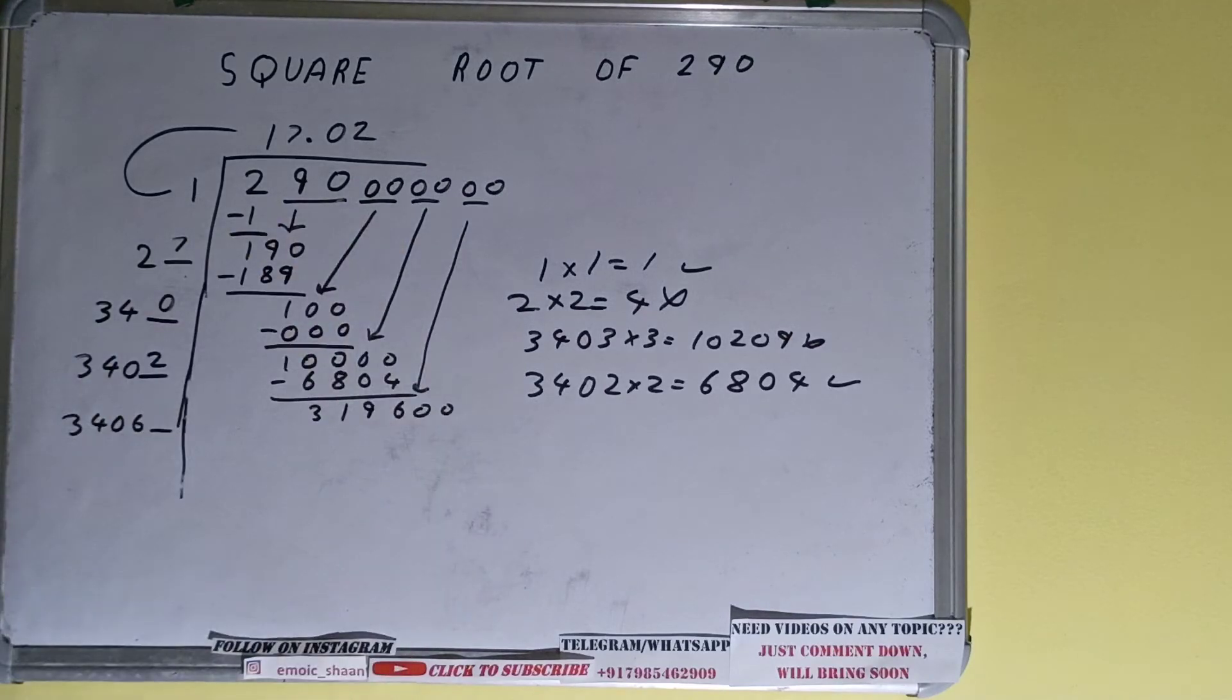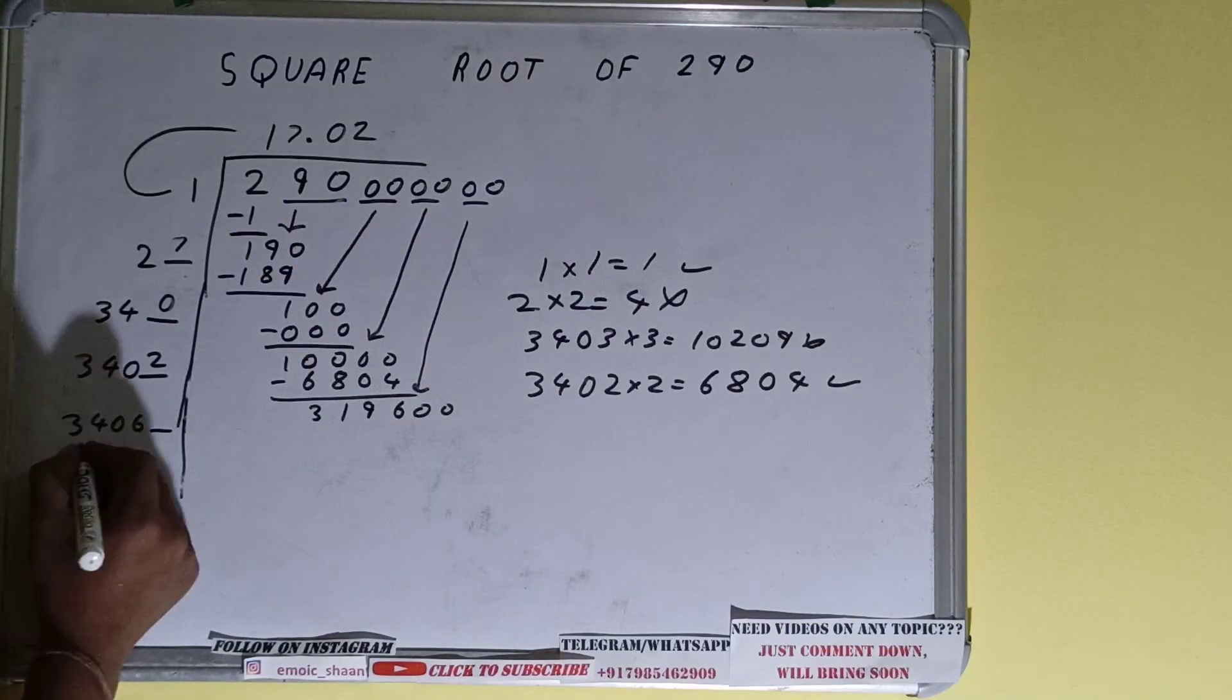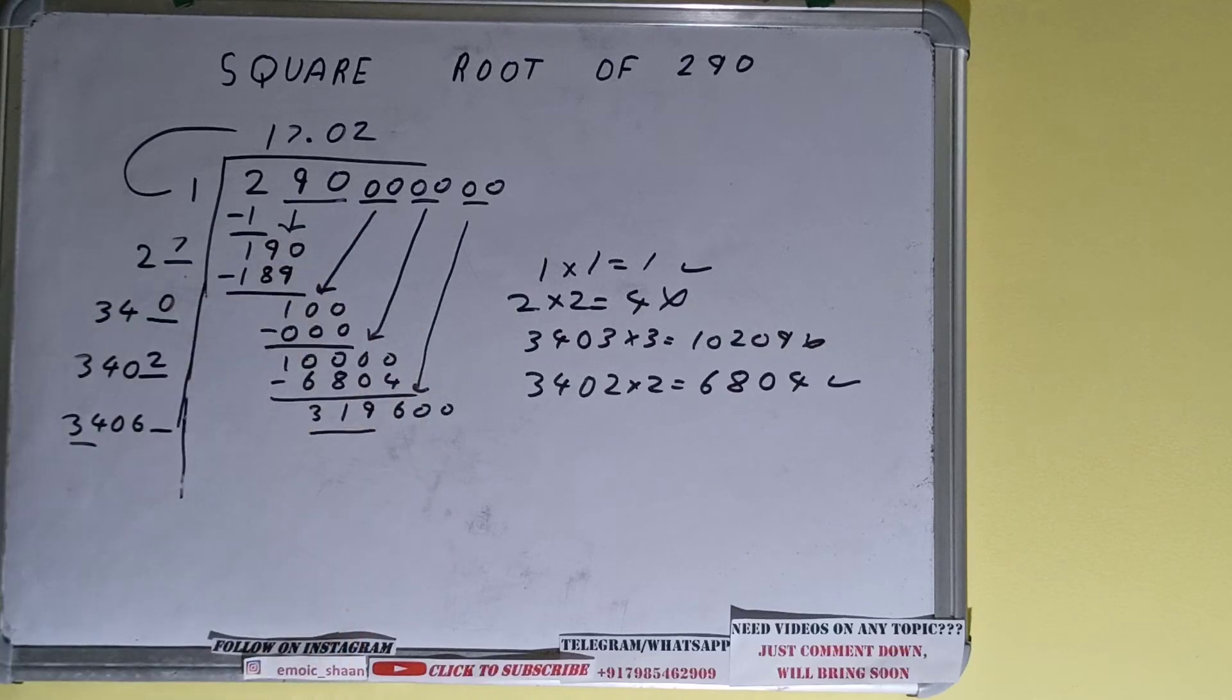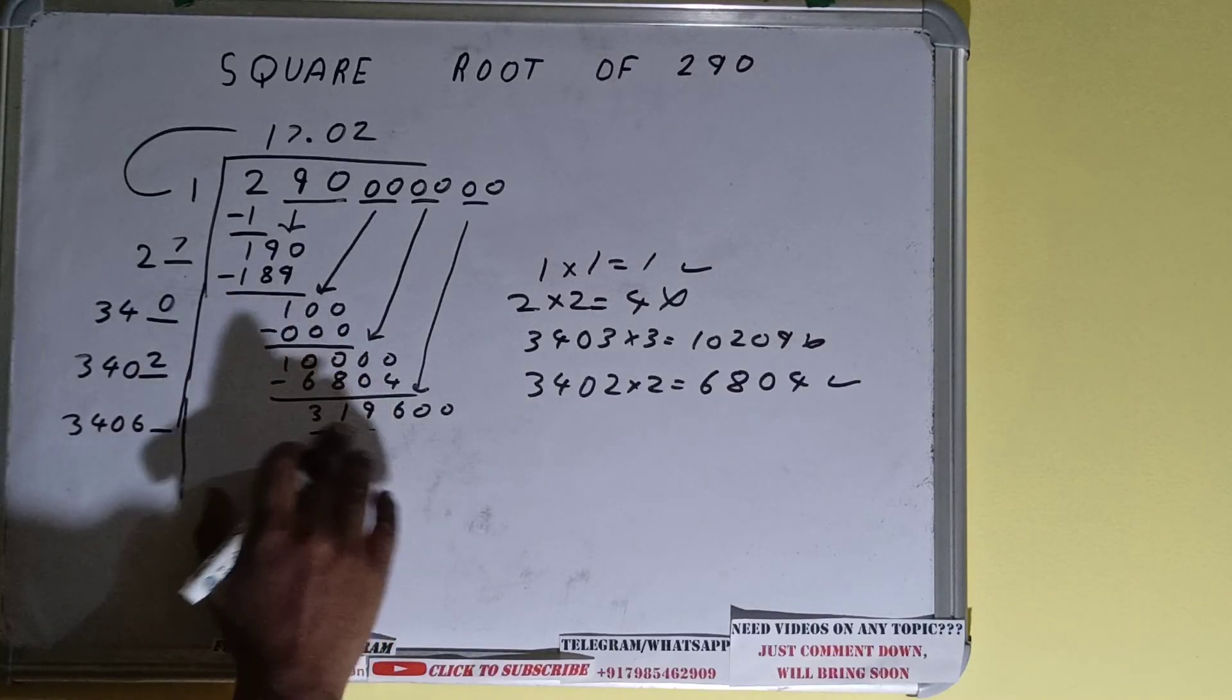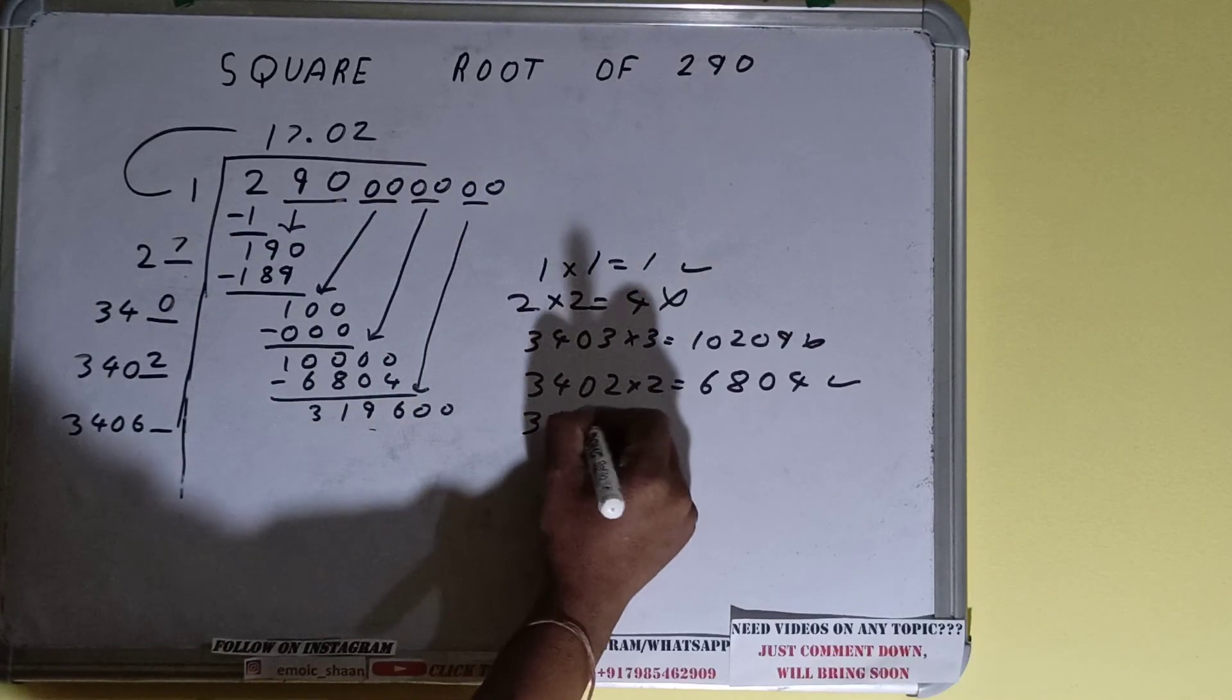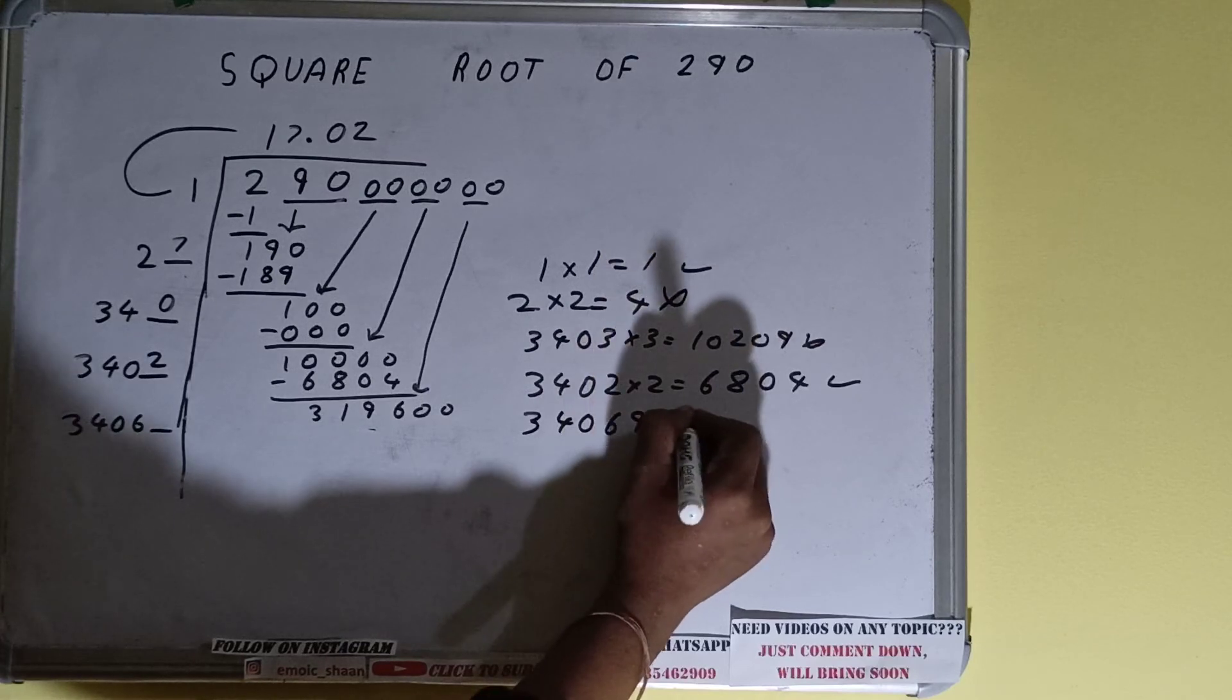And number will become 319,600. Now compare this 34 with this 319. 34×8 is 272, 34×9 is 306, and 34×10 as we all know is 340. So we can try nine times. So 34069×9 we can try.